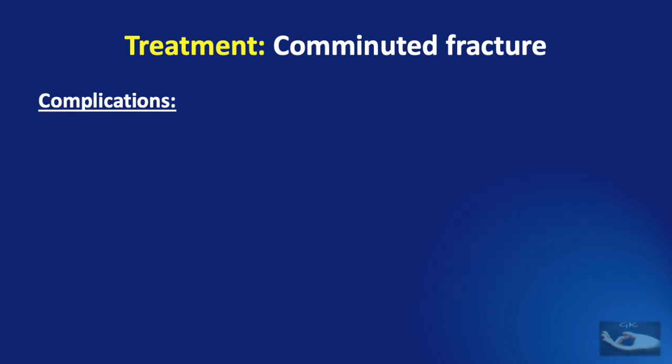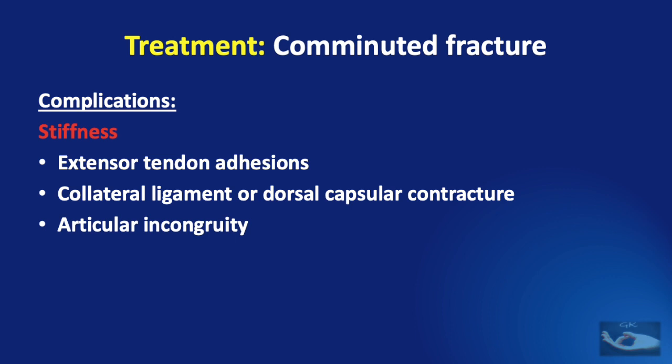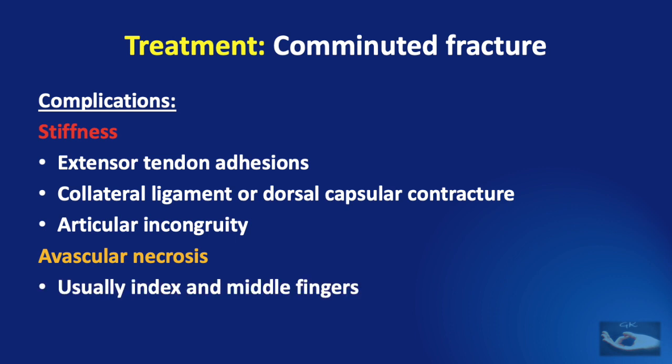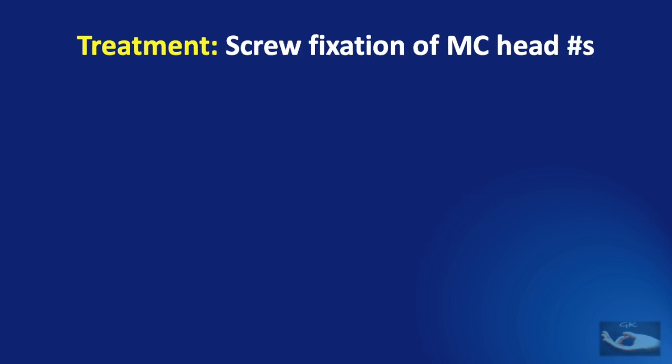The most important complication of metacarpal head fracture management is stiffness of the metacarpophalangeal joint, which may be due to extensor tendon adhesions, collateral ligament or dorsal capsular contracture, or articular incongruity. Another important complication is avascular necrosis of the metacarpal head fragment, usually involving the index and middle fingers.